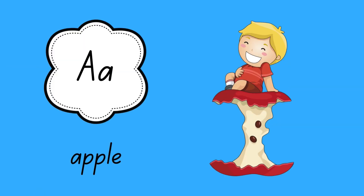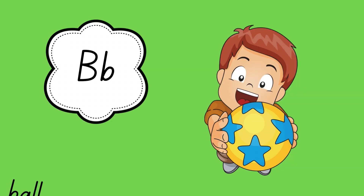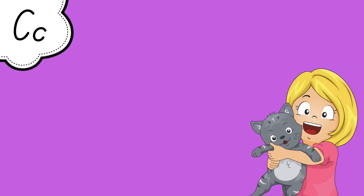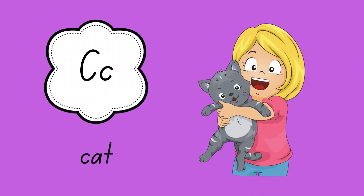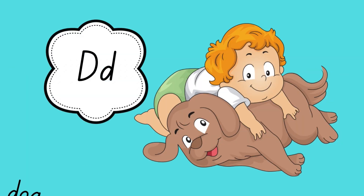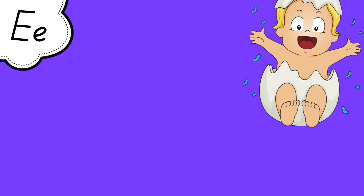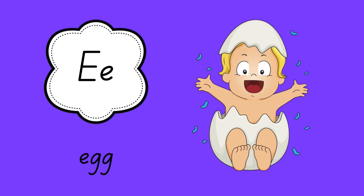A is for apple. B is for ball. C is for cat. D is for dog. E is for egg.